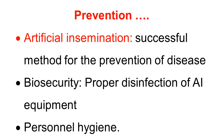Continuing the discussion of prevention: nowadays, artificial insemination is practiced intensively all over the world, and that is the only successful method for prevention of bovine genital campylobacteriosis, so artificial insemination is a must to prevent the disease. Biosecurity, especially proper disinfection of artificial insemination equipment, is very important. The semen used should not be infected, otherwise it may spread the disease, so semen must be pure and clean without infection. Personal hygiene is also very important for prevention of the disease.